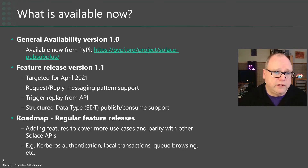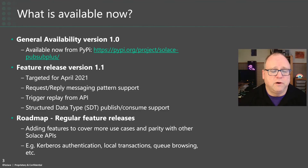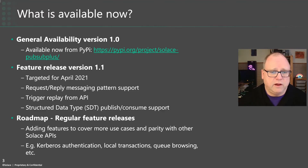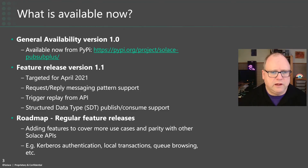This will start a regular release cycle of every two to three months, bringing the Python API up to speed with all the other enterprise Solace APIs — such as the brand new Java API, which shares a lot in common with this one, and the C and other APIs. That includes things like Kerberos authentication, transactions, and queue browsing. We'll be continually bringing more and more features to achieve parity with the other APIs.